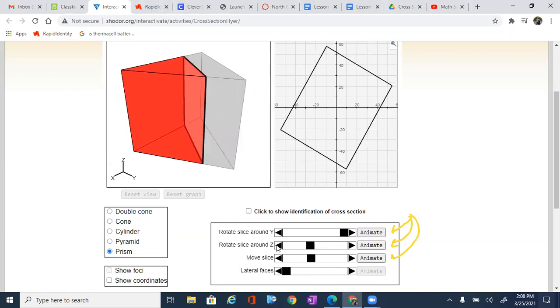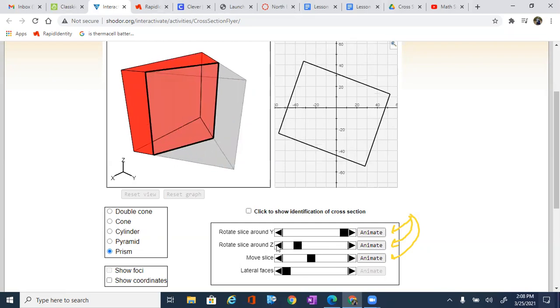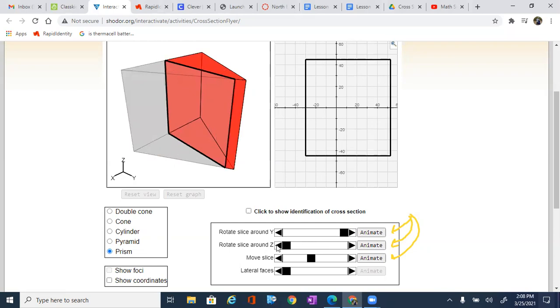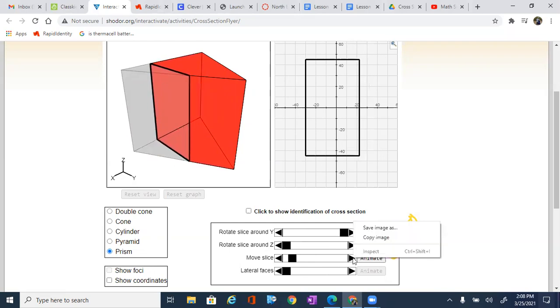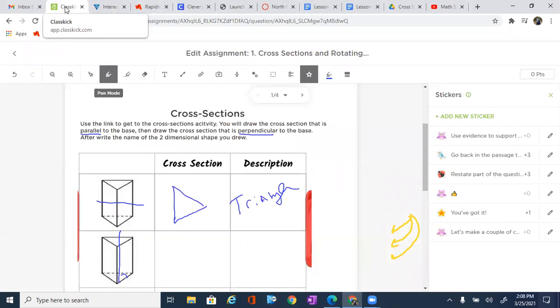And I can move that piece around. And as I move it around, you'll notice that there is a type of shape that is showing up every single time. No matter how I move it, perpendicular to the base, I should be looking at a rectangle.